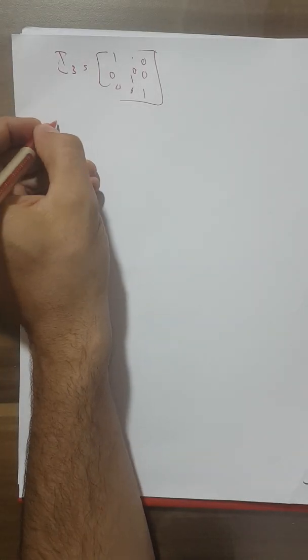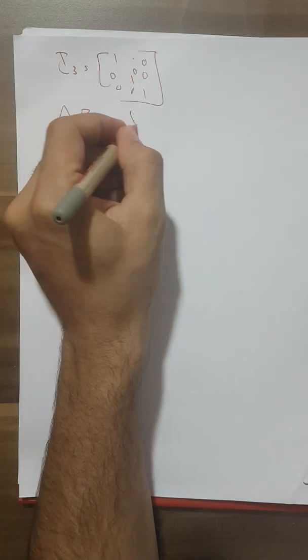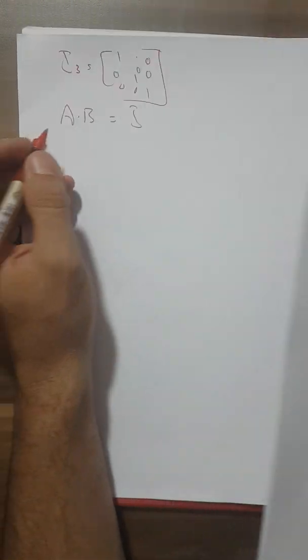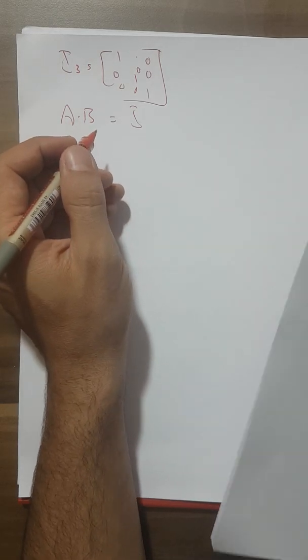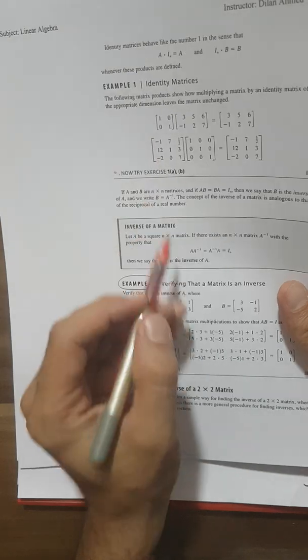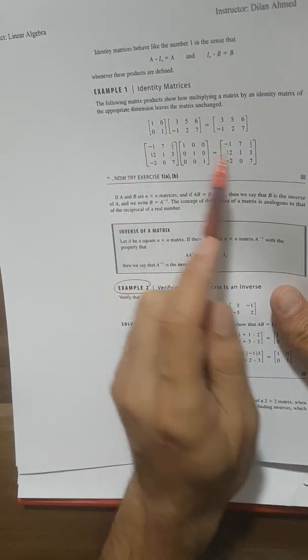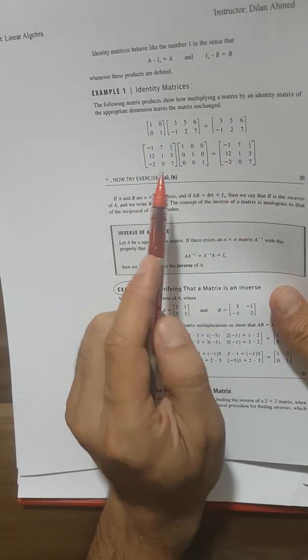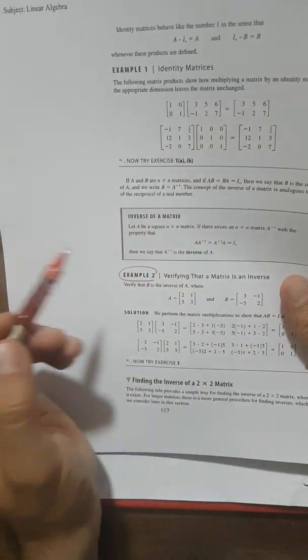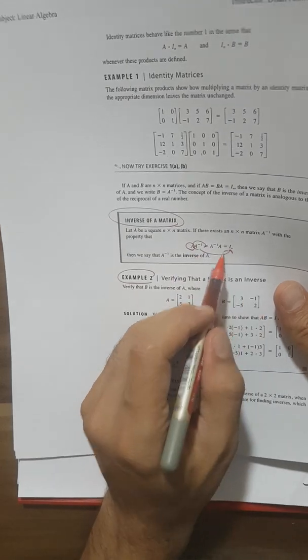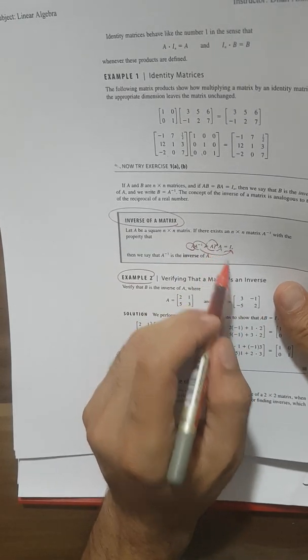Before finding the inverse, we should know that if I multiply two matrices together and I get the identity matrix I, it means that A and B are inverses of each other. If we multiply any matrix by the identity, we get the same matrix. But what I mean here with the inverse is: if we multiply any matrix by its inverse, we directly get the identity matrix.